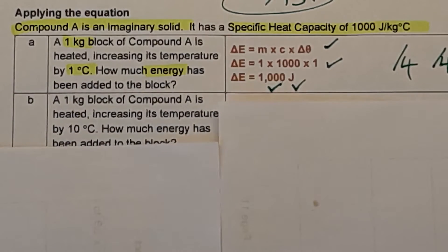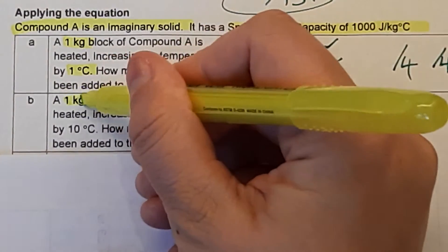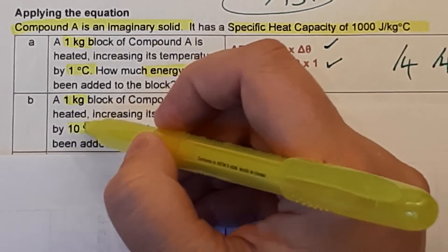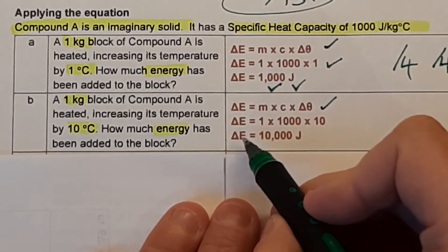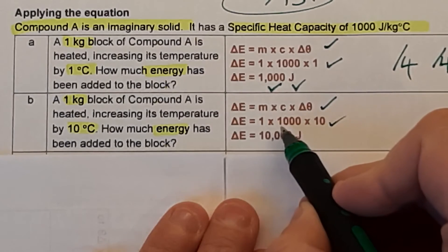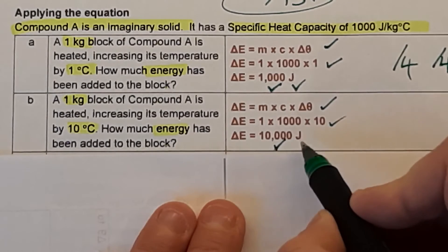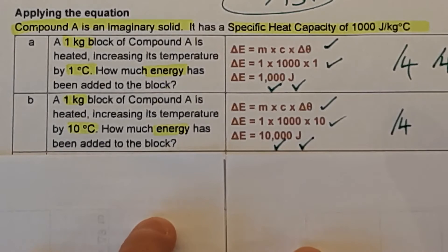Question B: a 1 kg block of compound A is heated, increasing its temperature by 10°C. How much energy? Same equation ΔE = m × c × Δθ; this time it's 1 × 1,000 × 10 = 10,000 J. Mark out of four: one for the equation, one for the numbers, one for 10,000, one for joules.